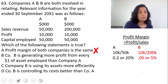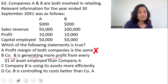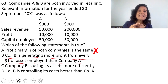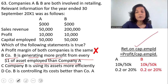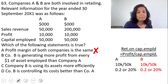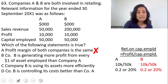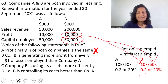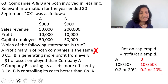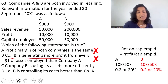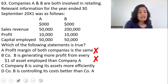Option B: company B is generating more profit from every dollar of asset employed — that means return on capital employed (ROCE) = profit ÷ capital employed. Company A: $10,000 ÷ $50,000 = 20%. Company B: $10,000 ÷ $50,000 = 20%. Both are the same, but option B claims company B is generating more profit, so option B is also false.